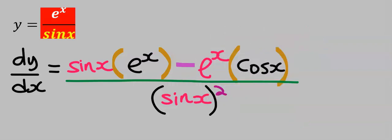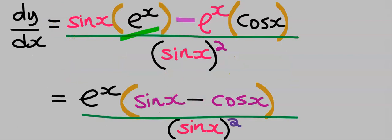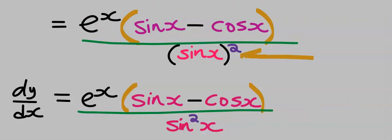We have just applied quotient rule. Next, we'll simplify your result. If you factorize exponential out, then you will get this. We can rewrite the denominator like this. Both are the same. And this becomes our final answer.